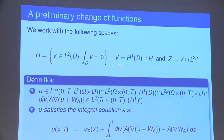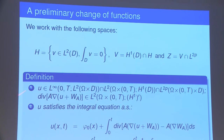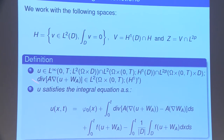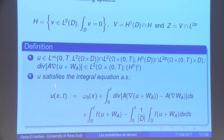We work on specific subspaces. We introduce H as the set of v in L2(D) such that the integral over D of v equals 0. Then capital V equals H1 intersection with H, and Z equals V intersection with L2p. We define the solution of problem P2: u belongs to some subspace and satisfies the integral equation u(x,t) equals phi_0 plus the integral from 0 to t of the nonlinear diffusion term, plus the integral from 0 to t of the reaction term minus the non-local term.